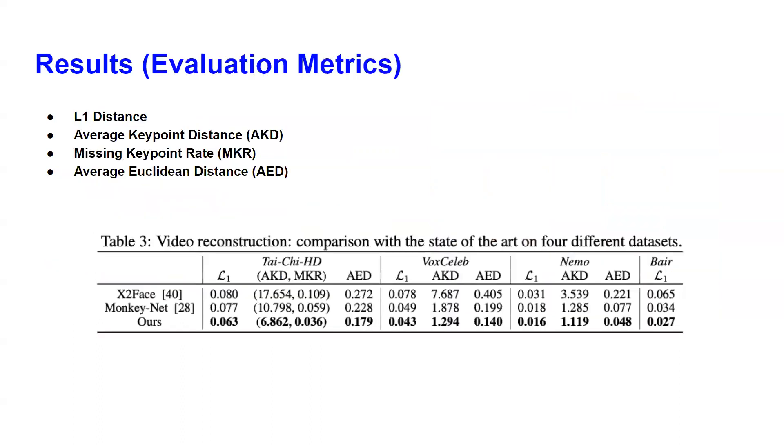These are some results. For the evaluation metrics, they used the L1 distance, average key point distance, missing key point rate, and average occlusion distances. In the paper authors state that the two state of the art models known at that time were X to face and monkey net. The performance of the first order motion model outperforms those state of the art models of that time by a lot. These are some qualitative results.